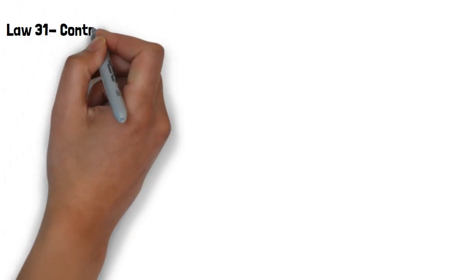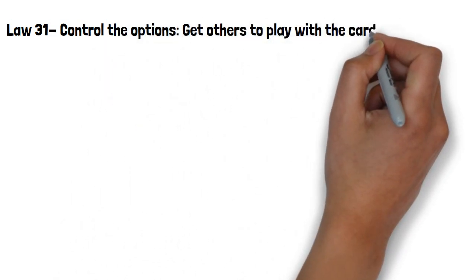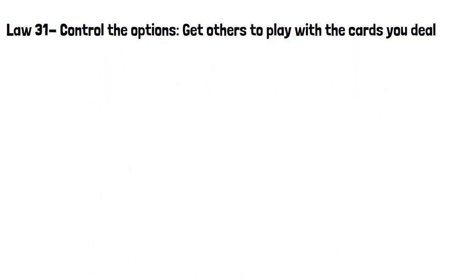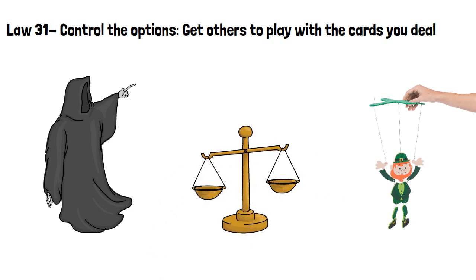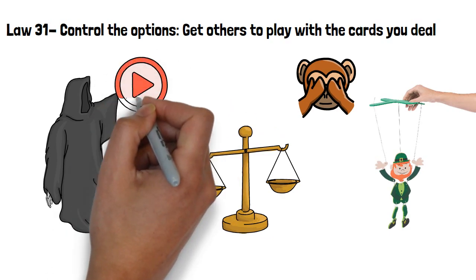Law 31, control the options. Get others to play with the cards you deal. By giving your rivals a choice, they'll feel that they're controlling their destiny. What they won't know is that you are using them as a puppet to choose between two scenarios, both of which serve you. When given a choice between two possibilities, people rarely consider all the other potential options that could be available. Instead, they blindly prefer to believe they have the power in their decision making. Too much freedom creates anxiety. By arranging a narrow range of choices, you can guide your opponent to play right into your hands.